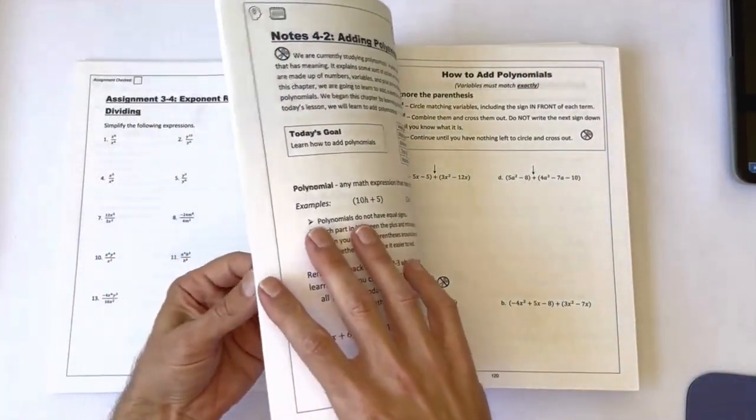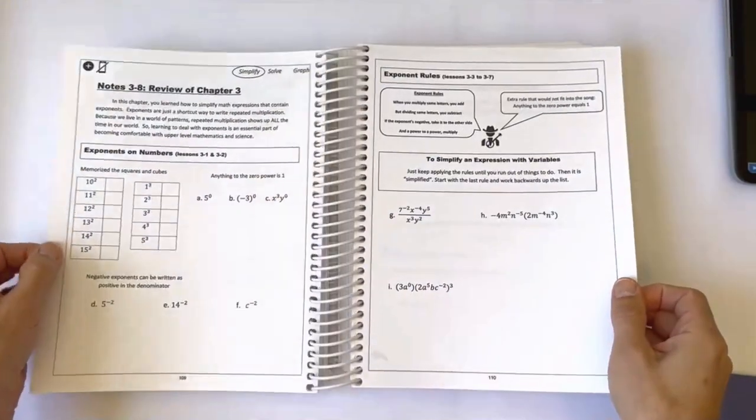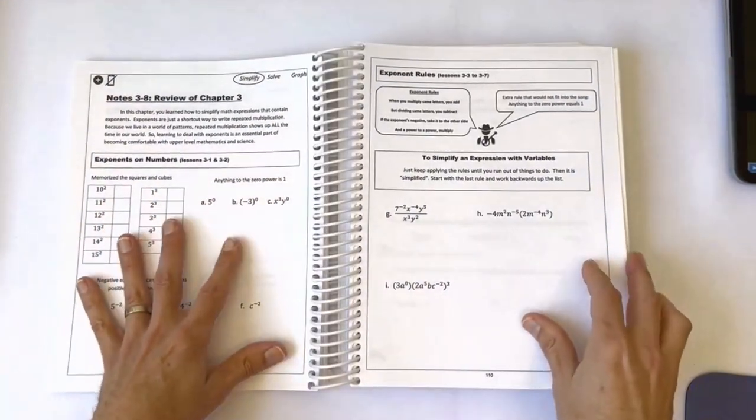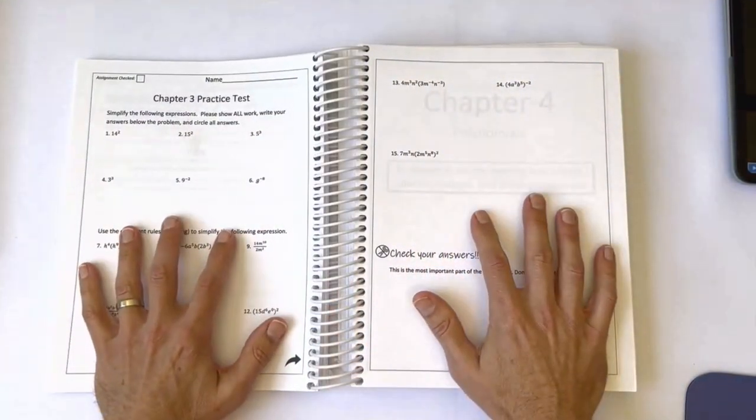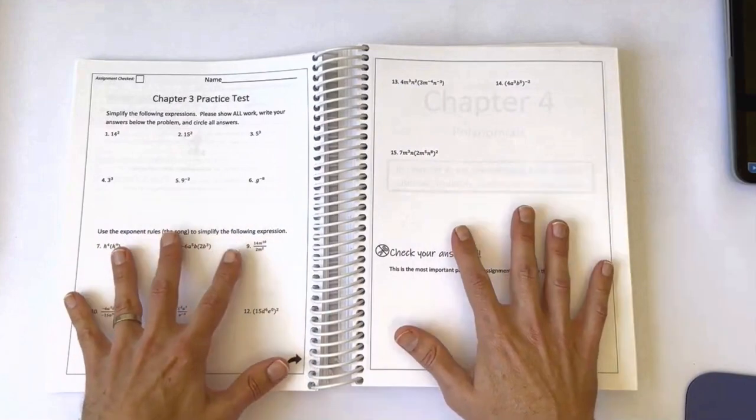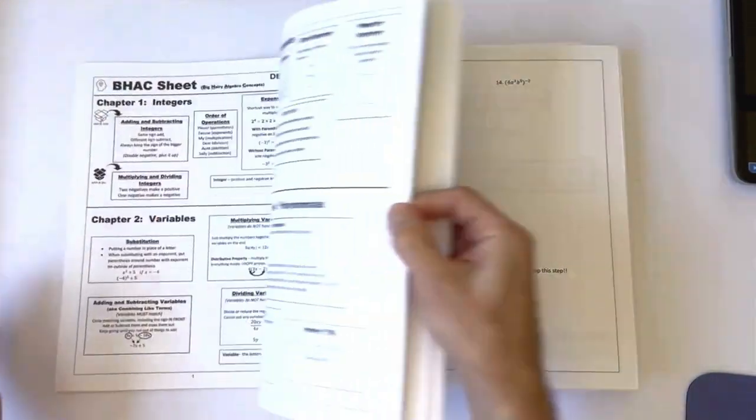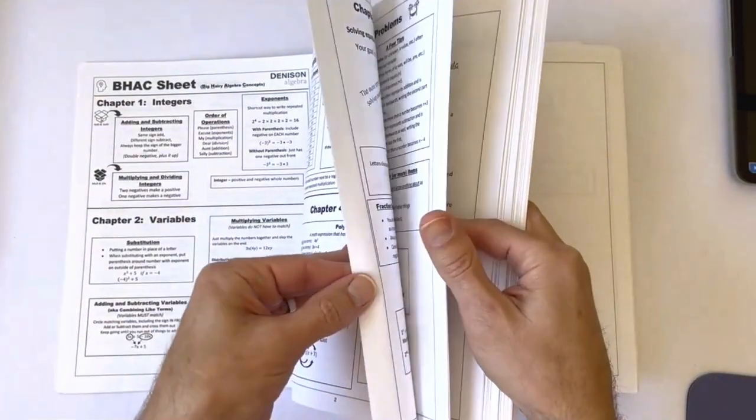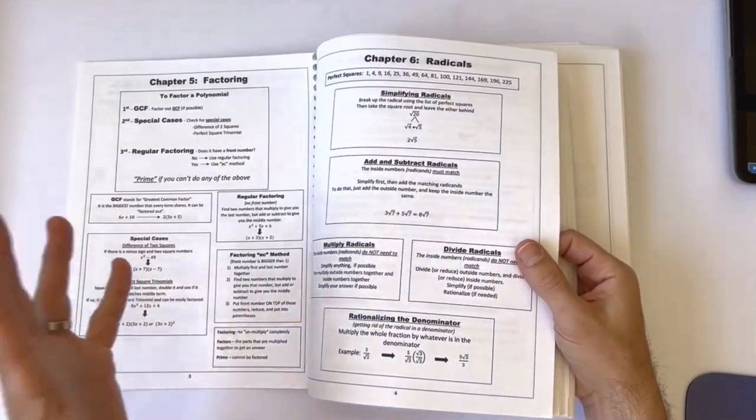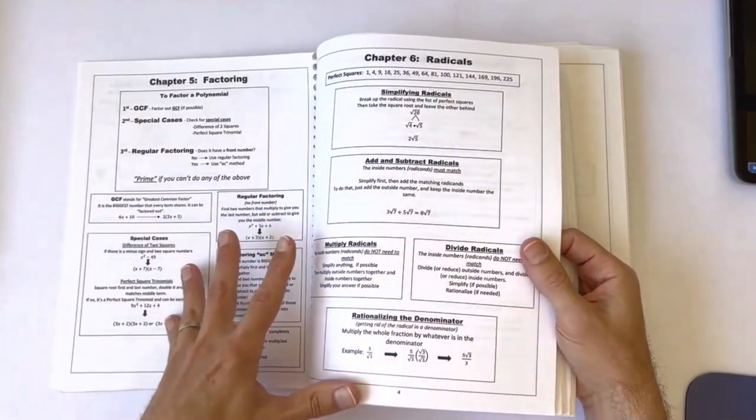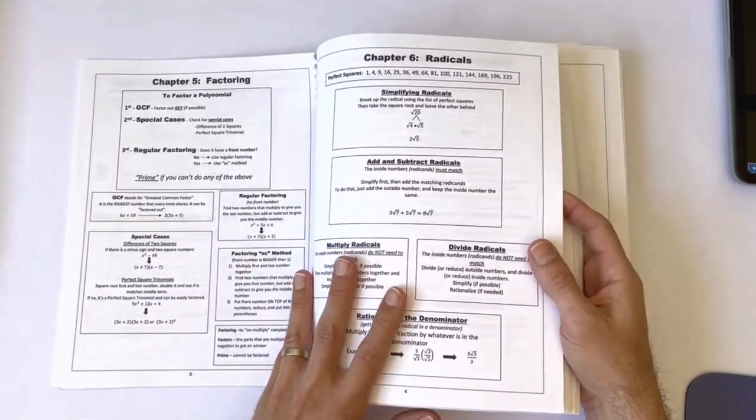At the end of each chapter is a review lesson where I go over every concept that we've learned in the chapter. And the assignment for that day is a practice test, so students can see how well they're prepared for the chapter test. Also, there are summary sheets or cheat sheets for each chapter located in the front of the book that students can use on homework, tests, and for review. So I am a huge believer in intentional and effective review.